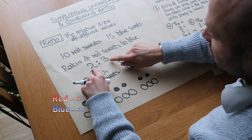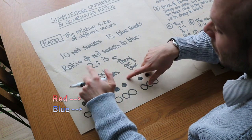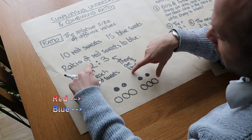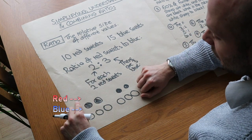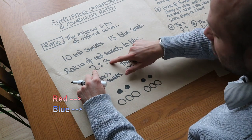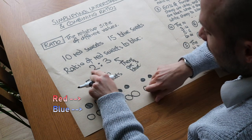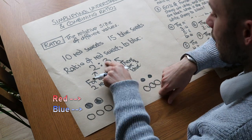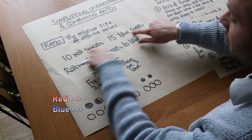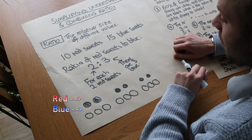That means with a ratio, I can always times these numbers by whatever I like. If for each two red sweets I have three blue, I could also say for each four red sweets I have six blue, for each six red sweets I have nine blue. And I could times these both by five to make that 10 red sweets and 15 blue sweets. So this number of sweets is consistent with this ratio.